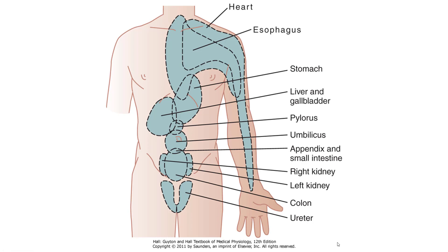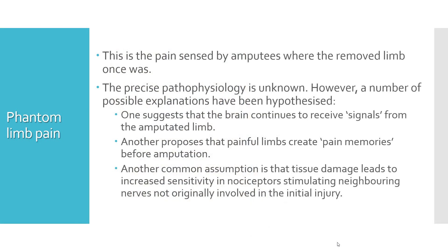There's another type of pain called phantom limb pain. This is the pain sensed by amputees where the removed limb once was. This pain is often described as burning, cramps, tingling, electrical shock, itching or pins and needles, and it has been reported by the majority of trauma and surgical amputees. The precise pathophysiology is unknown; however, a number of possible explanations have been hypothesized. This pain can be very annoying and may last for months to years, requiring very complex management.